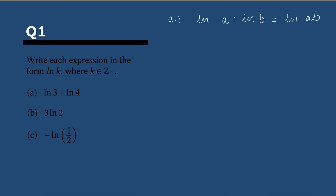First, we have ln 3 plus ln 4. For this, we have to use the rule of logarithms that says that for two logarithms with the same base that are being added, we can multiply. So in this case, it's ln 3 times 4, which is ln 12.